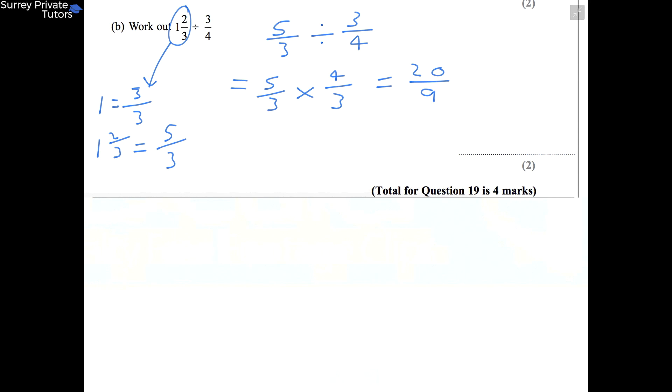And now at this point you want to check to see if you can simplify it, but 20 and 9 they don't actually have any common factors, so we can't divide either of those numbers by anything. So it's already in its simplest form, so your final answer is just 20 over 9.